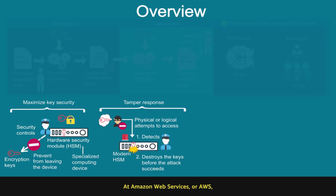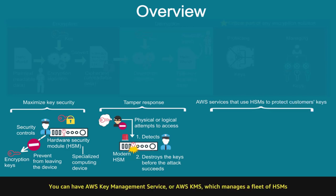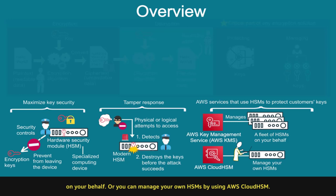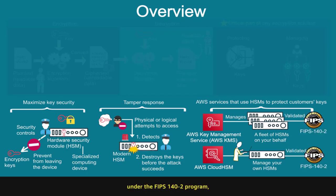At Amazon Web Services, or AWS, we offer two services that use HSMs to protect customers' keys. You can have AWS Key Management Service, or AWS KMS, which manages a fleet of HSMs on your behalf. Or, you can manage your own HSMs by using AWS Cloud HSM. In both AWS KMS and Cloud HSM, HSMs are validated under the FIPS 140-2 program, the standard for evaluating cryptographic modules.